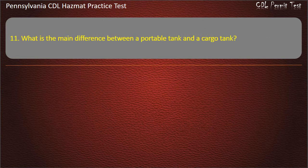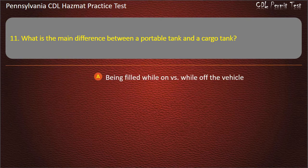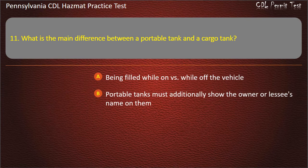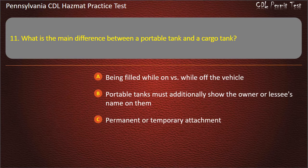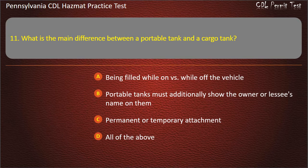Question 11. What is the main difference between a portable tank and a cargo tank? Options: Being filled while on versus while off the vehicle; Portable tanks must additionally show the owner or lessee's name on them; Permanent or temporary attachment; All of the above. Answer: All of the above.